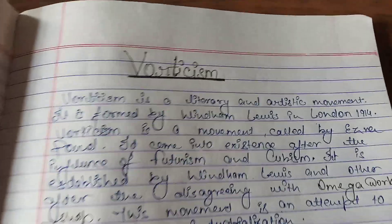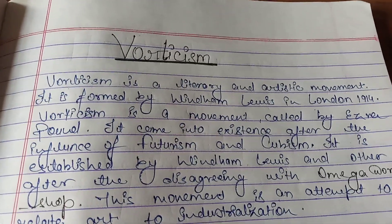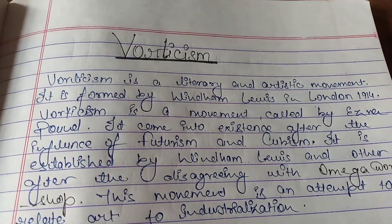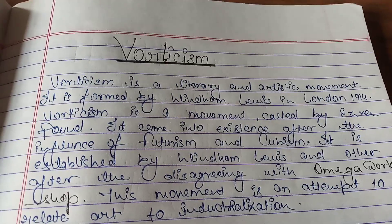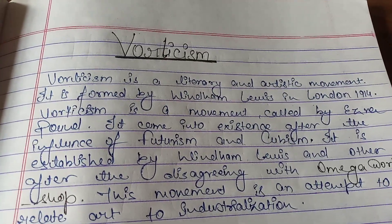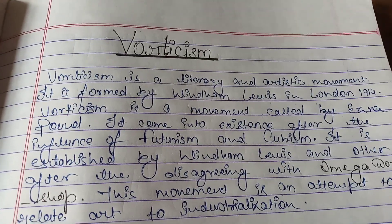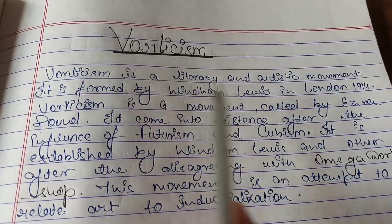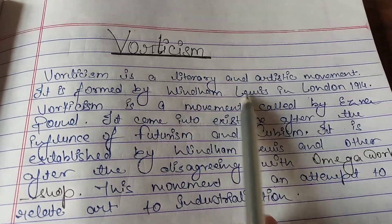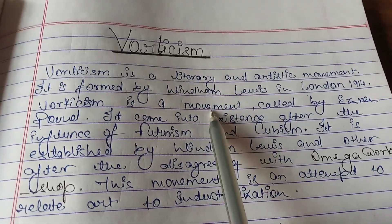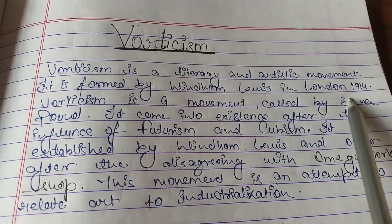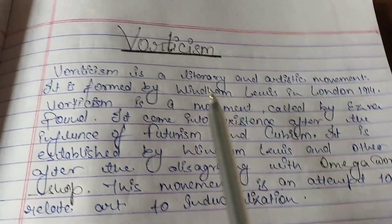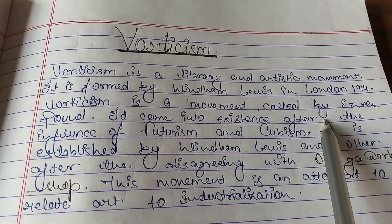Vorticism is a literary and artistic movement. This movement came into the modern age after World War I. It is a literary and artistic movement formed by Wyndham Lewis in London in 1914. Vorticism is a movement named by Ezra Pound.